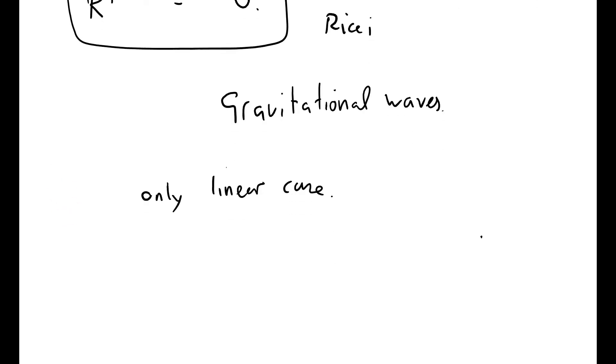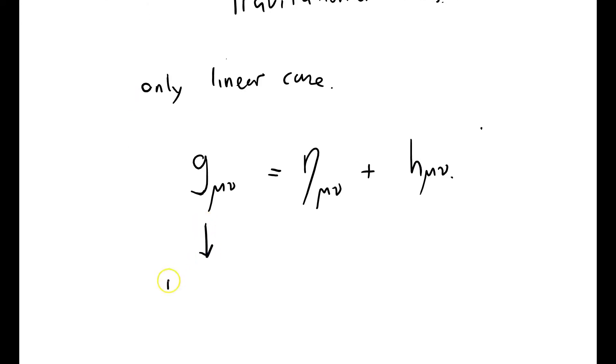So what we're going to do is we're going to start out with the metric tensor g_μν, and I'm going to assume that that is equal to η_μν plus h_μν. So this is the metric tensor.